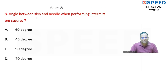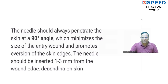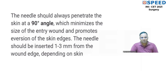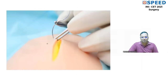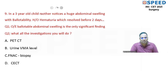Question eight: The angle between skin and needle when performing an interrupted suture. The answer is 90 degrees. The needle should always penetrate the skin at a 90-degree angle, which minimizes the size of the entry wound and promotes eversion of skin edges. The needle should be inserted 1 to 3 mm from the wound edge depending on the skin type.